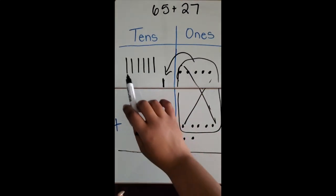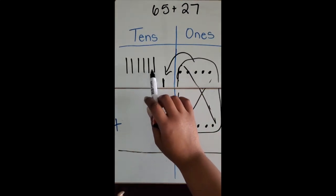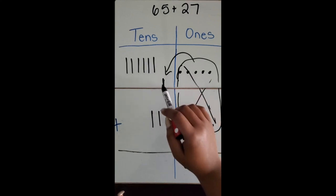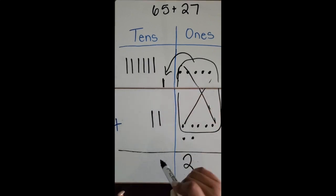Now I'm going to add up all my tens. One, two, three, four, five, six, seven, eight, plus the extra one we regrouped is nine. So now I have nine tens and two ones.